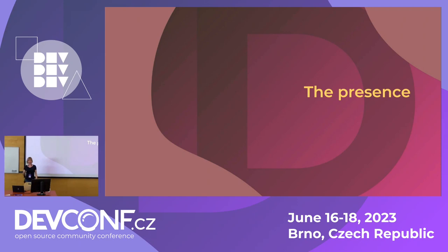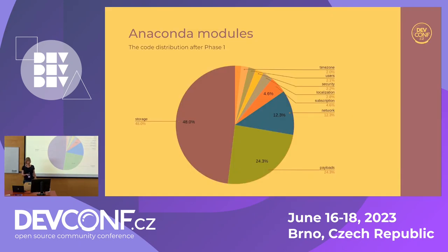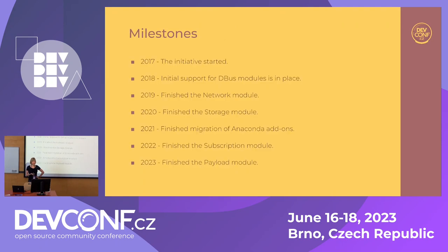So what's the current situation? We finished the first phase, and this is the code distribution of our current modules. As you can see, storage consumes most of the code, then payload, then network, and the other modules are pretty small. You can guess we spent years on storage development, another on the payloads module, and then network and the other stuff was pretty easy. Here are some milestones — yeah, it took forever. But as I tried to explain, there were all these reasons for that.